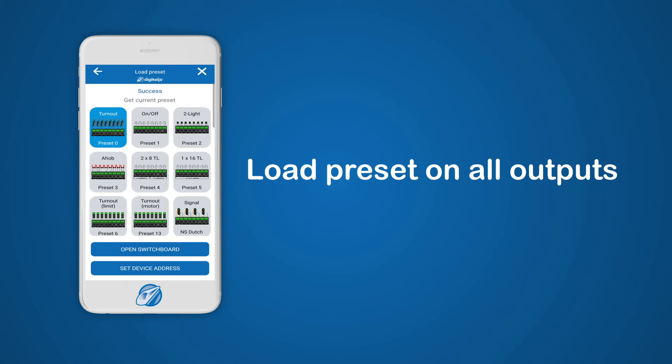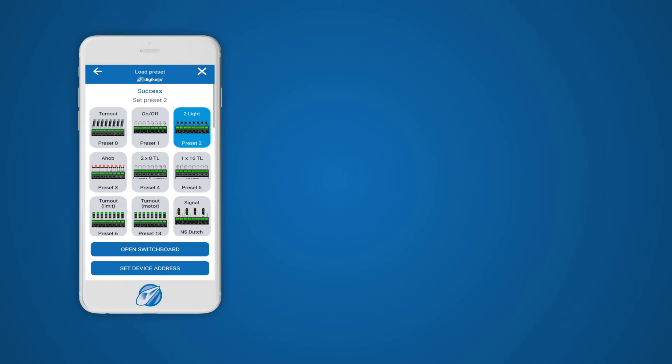When the Load Preset on All Outputs section is loaded, the app will show you which preset is currently loaded — this preset will be colored blue. When you want to change the preset, please select the preset you need and the selected preset will now be colored blue.